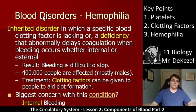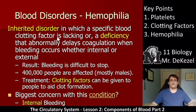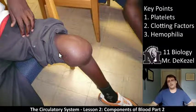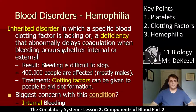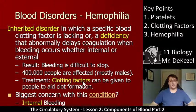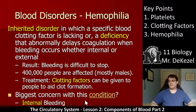Hemophilia is a blood disorder that is inherited — you get it genetically. A specific blood clotting factor is lacking, which is a deficiency that abnormally delays coagulation when bleeding occurs, whether internal or external. That swollen knee is an internal bleed with no clotting. If you get a large cut on your arm, you may also be unable to stop the bleeding. Bleeding is difficult to stop with hemophilia; it affects many people, mostly males, and treatment can be given by administering clotting factors.